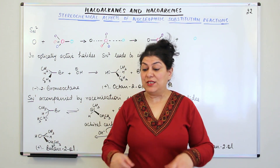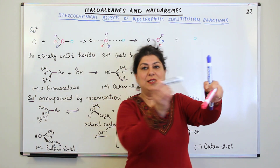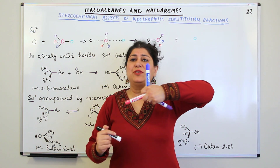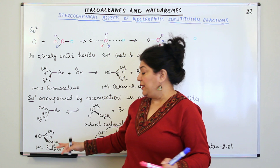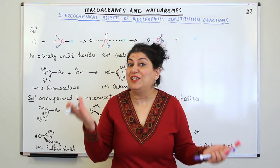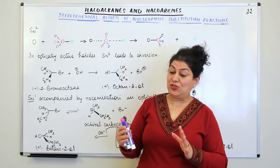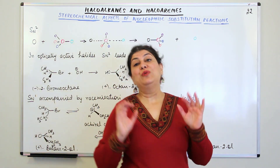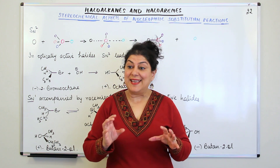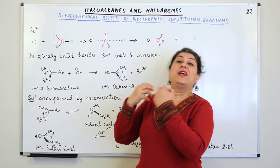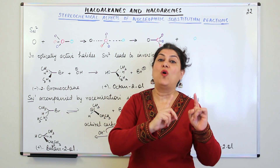Since the OH⁻ can attack equally from both directions — because the carbocation is absolutely symmetrical — the dextrorotatory and levorotatory enantiomers are formed in equal concentrations: 50:50. An equal concentration of both enantiomers is known as a racemic mixture. Therefore, when SN1 mechanism takes place it leads to racemization, while SN2 mechanism leads to inversion of configuration.